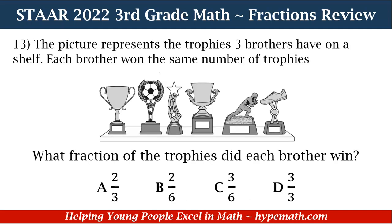Let's look at our first question. Remember, this question is in our STAAR Math Review Workbook for 3rd graders — that link will be in the description box. Number 13: The picture represents the trophies three brothers have on a shelf. Each brother won the same number of trophies. What fraction of the trophies did each brother win? A) 2/3, B) 2/6, C) 3/6, or D) 3/3.